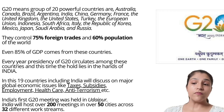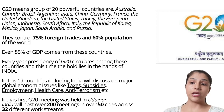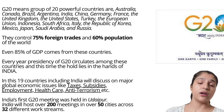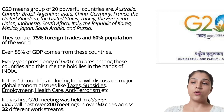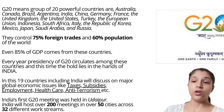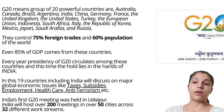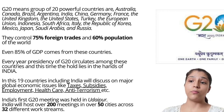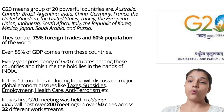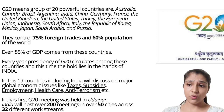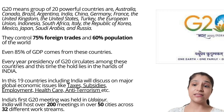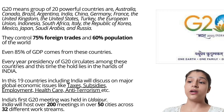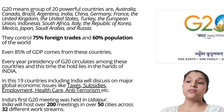The first meeting of G20 was in Udaipur, which is very important to remember. India will host 200 meetings across 50 cities and 32 different work streams.